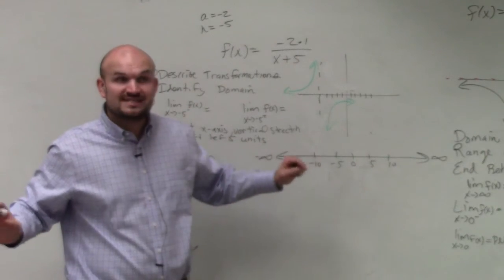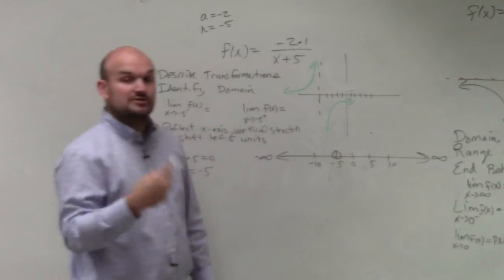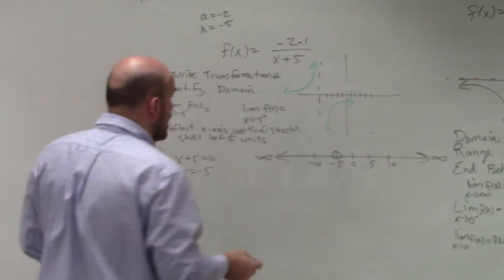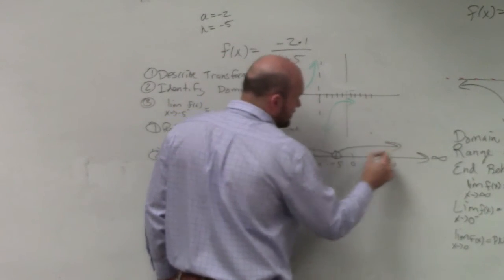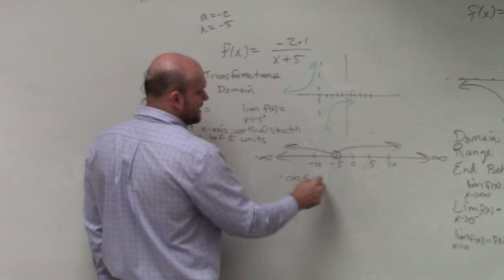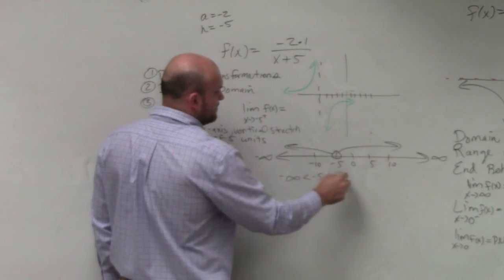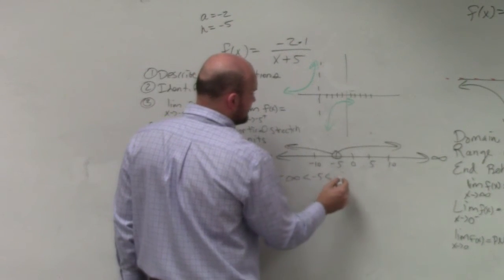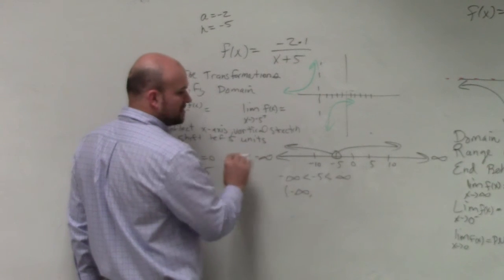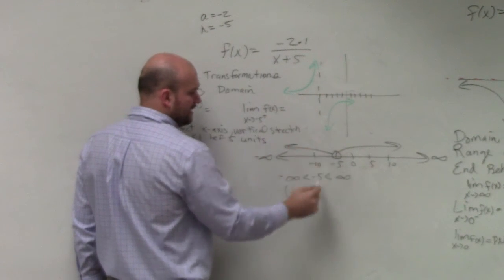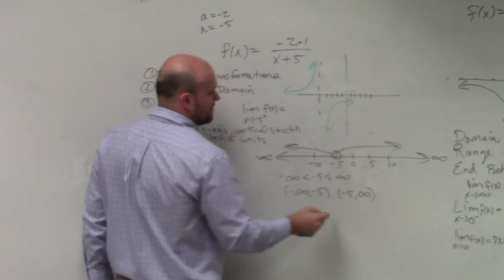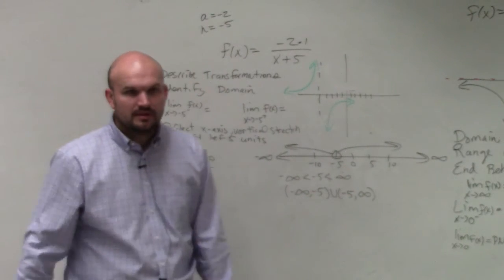But all numbers are covered except for -5. So in Algebra 1, we learned about open circles, right? Open circles means not part of the graph, but all other values are part of this graph. So let me actually write this as an inequality. Or the way that we've been teaching this is negative infinity goes all the way to -5, and then starts back at -5 to infinity. And we just connect those with the union. And that's it.